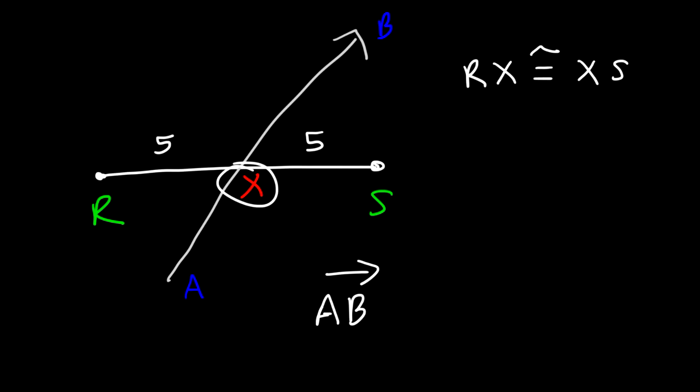Ray AB bisects RS into two congruent parts. Also, we could say that X is a bisector too — X bisects RS. So there are a lot of conclusions we could draw just from this picture. A midpoint divides a segment into two congruent parts.